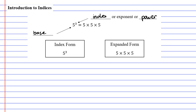You'll notice that the words index and indices look very similar. Indices is the plural version of index. We also need to know the difference between index form and expanded form. Index form is where you write it as 5 to the power of 3, and expanded form is where you write it as repeated multiplication: 5 times 5 times 5.